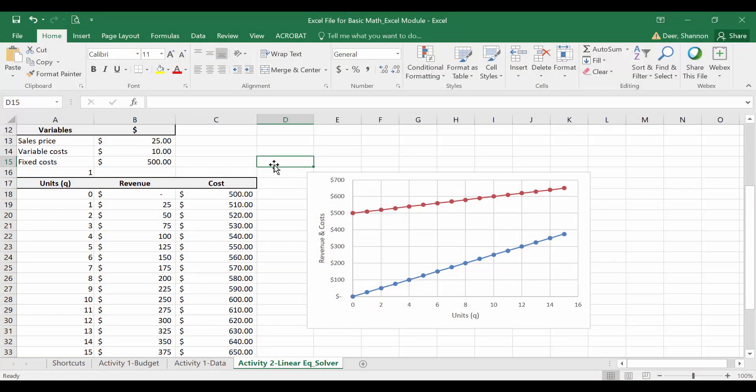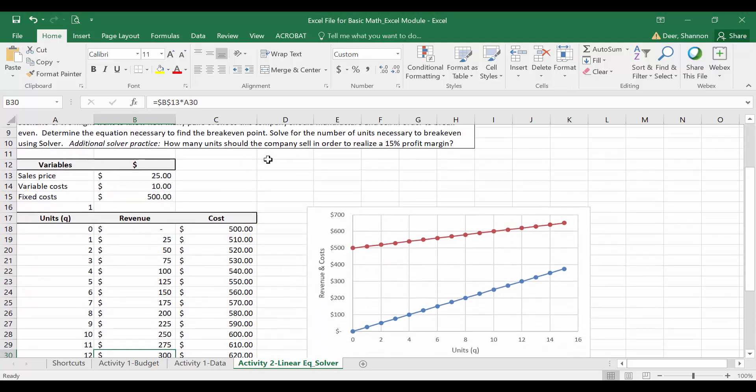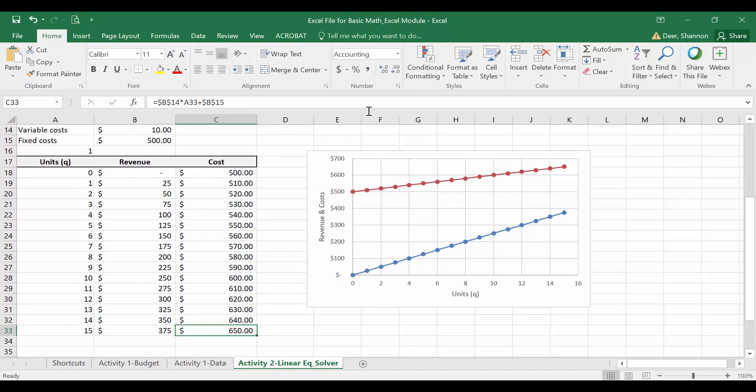Before we jump into the Excel magic, I want you to go back to the spreadsheet that we used earlier for Activity 2. This was the revenue and cost spreadsheet where we input the variables for Nike, calculated revenue and cost in a table, and then charted that information here as well.